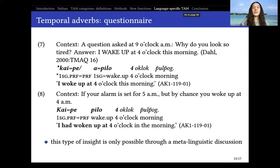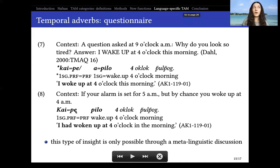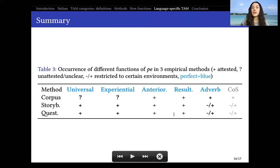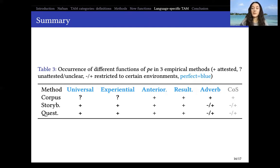In that contrastive context, perfect can be used to get the meaning of what in English would be past perfect: 'kaip below four o'clock,' meaning 'I had woken up at four o'clock' — prior to 5am. This type of insight was only possible through metalinguistic discussion with an engaged speaker, and I later tested it in storyboards. This moment of elicitation was crucial for understanding that Nafsan can have two different interpretations of P — even without tense — because it is the context that establishes the distinction between present and past perfect.